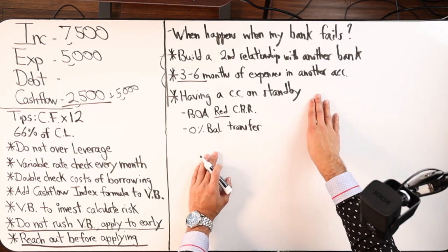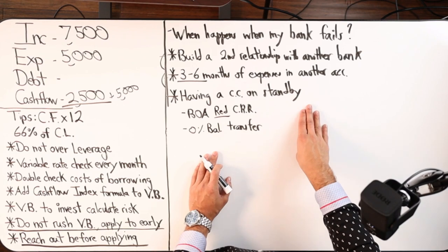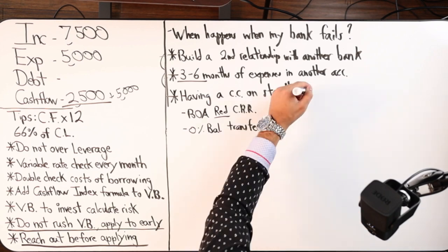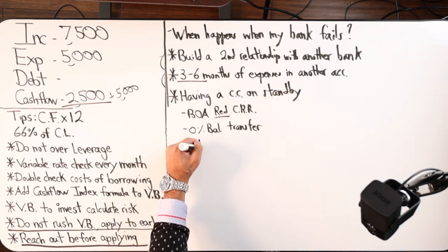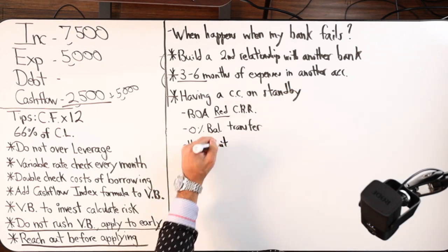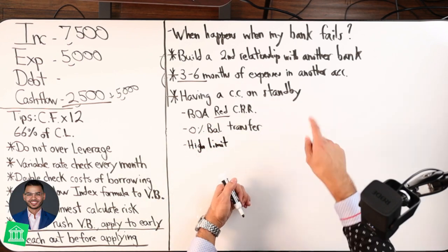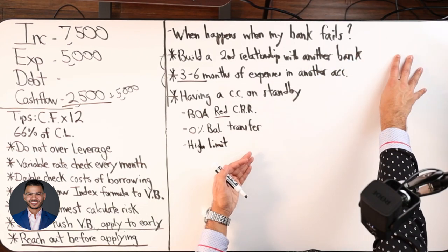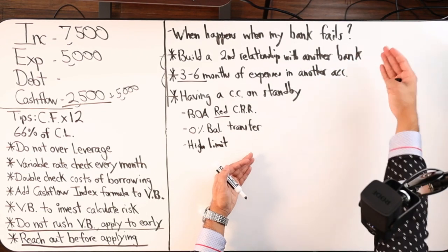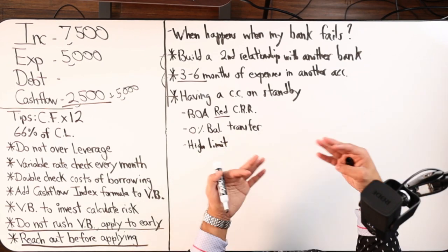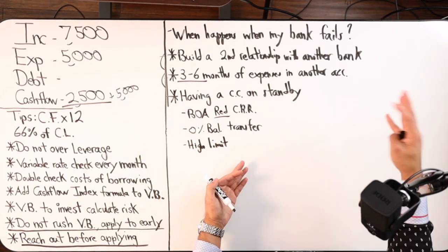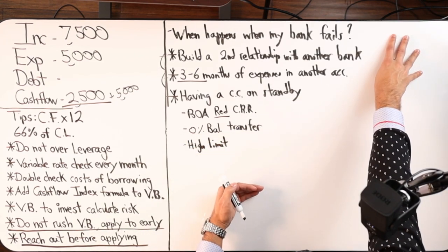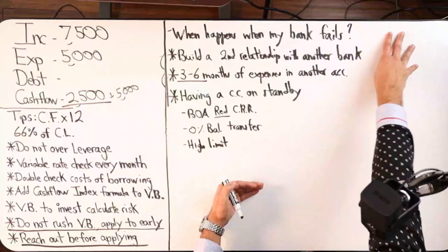You would just want to swipe it maybe once a year, twice a year. It's just off to the side and you want to have a high limit on this card. So the goal would be to have a credit card on the side and also have it be a high limit. The way to maintain that high limit is simply by asking for credit line increases every three to six months as you're doing velocity banking.